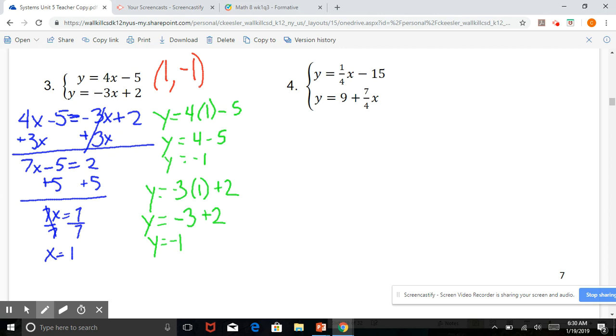All right, number 4, we have, again, two equations. We're going to drop the y's, set the remaining expressions equivalent to each other. So 1 4th x minus 15 equals 9 plus 7 4ths x.